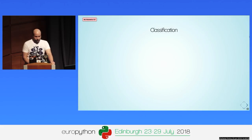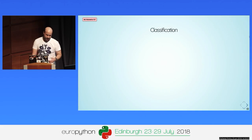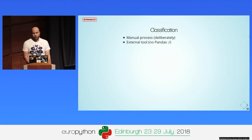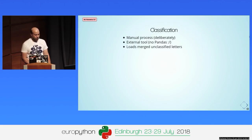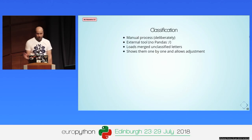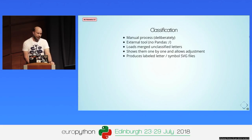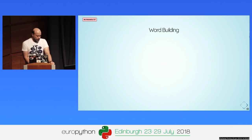Once we have this, we have a bunch of smaller letter files which we then need to classify. This is a deliberately manual process as per the client requirements. There is an external tool they use for this sort of thing — there is no pandas, unfortunately. It loads the merged and unclassified letter SVGs, shows them one by one to a human, allows the human to align them in the bounding box, and also allows them to label them: this is a dollar sign, this is a capital A, this is a lowercase L, and so on.